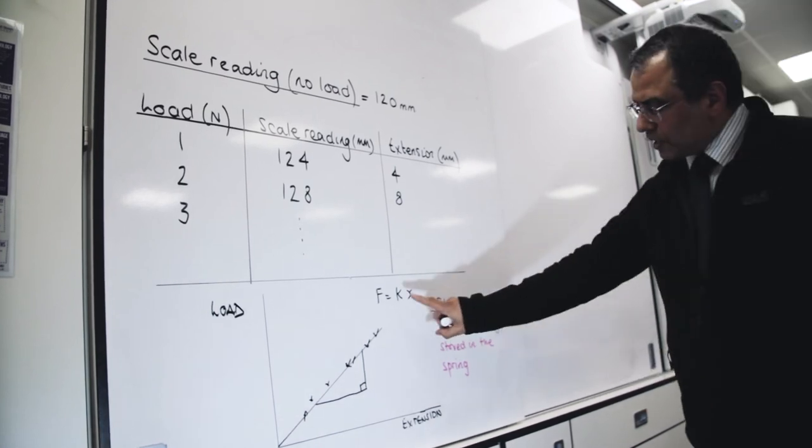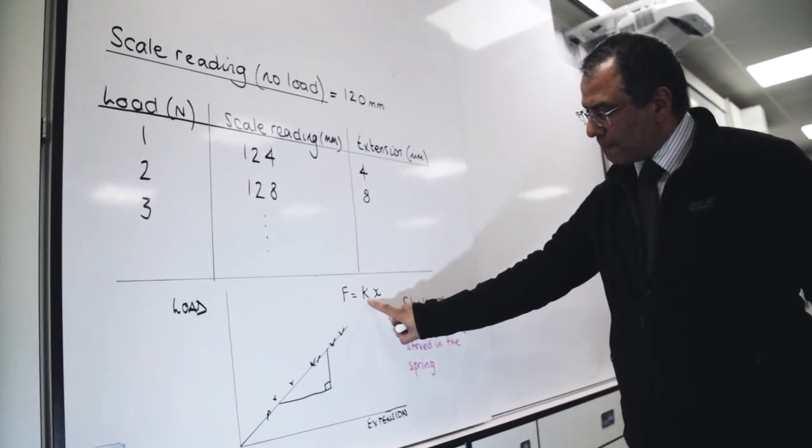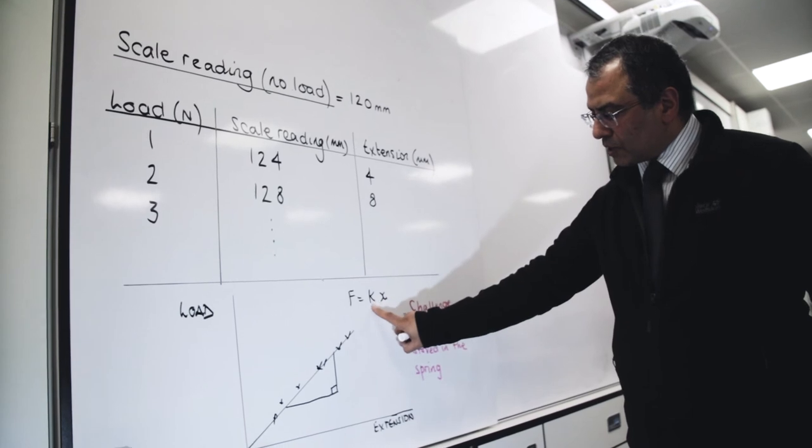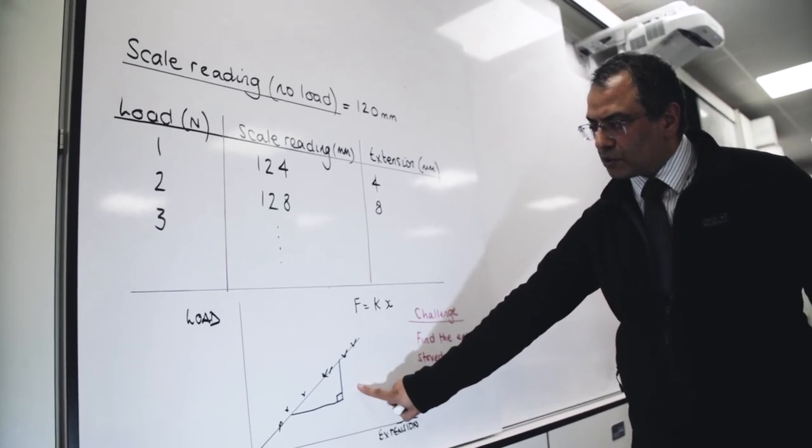So now, this is of the form y equals mx, where m is the gradient, and the gradient gives you the spring constant.